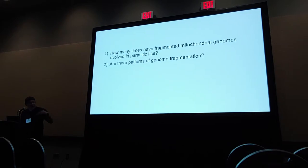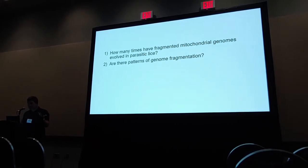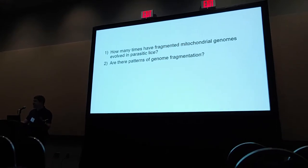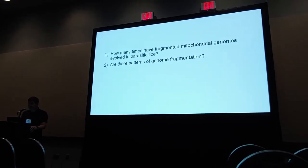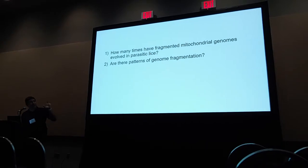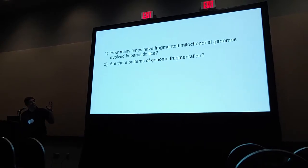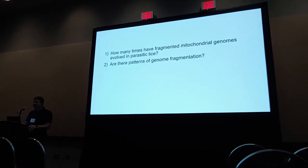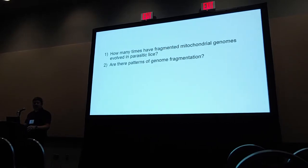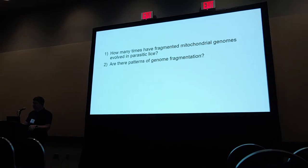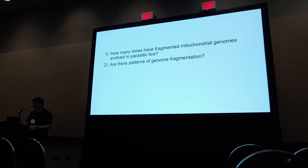Out of this background, there are two questions I'd like to address. The first is: how many times have fragmented mitochondrial genomes arisen in parasitic lice? Basically, do we see them in bird lice as well as in mammal lice? Then, jumping off of this question, getting at whether there are patterns to the level of genome fragmentation, and whether it is informative for understanding evolutionary relationships or the order of fragmentation in these genomes.